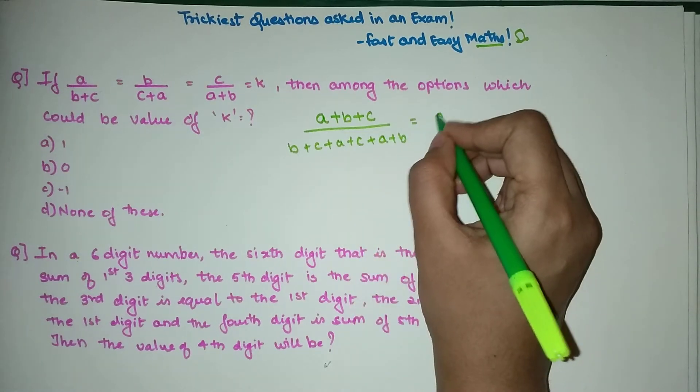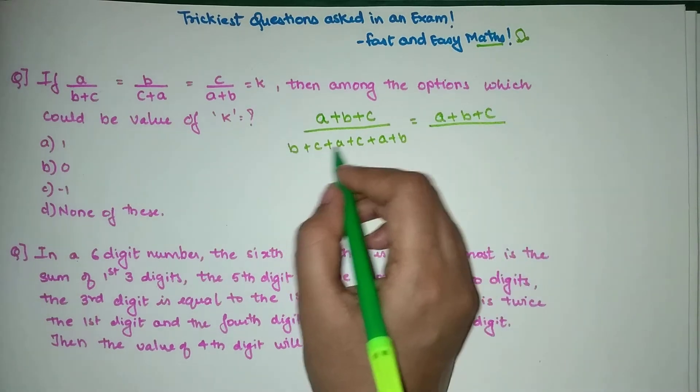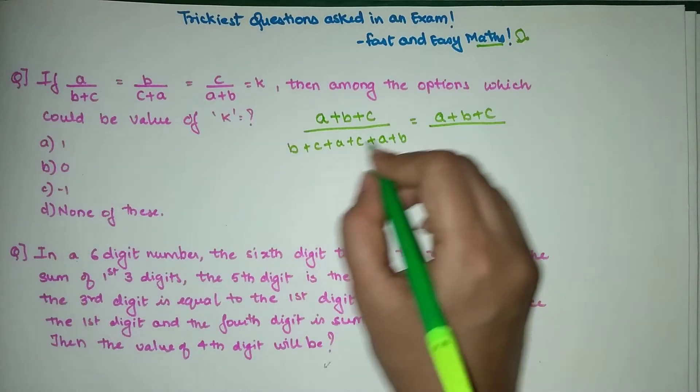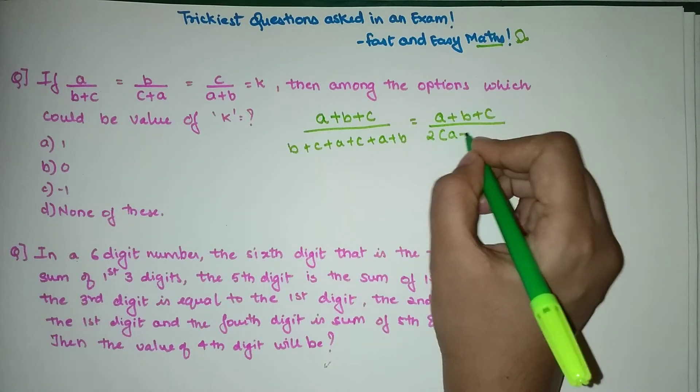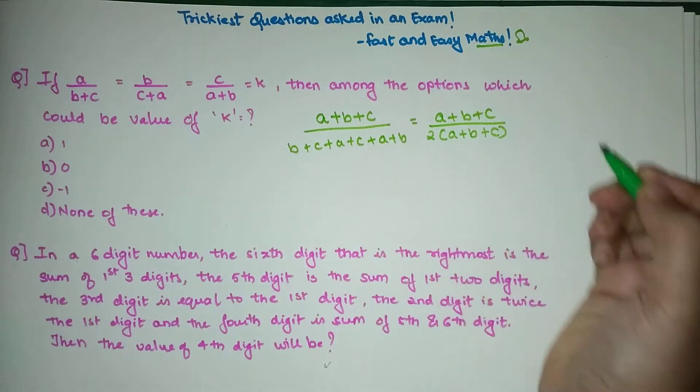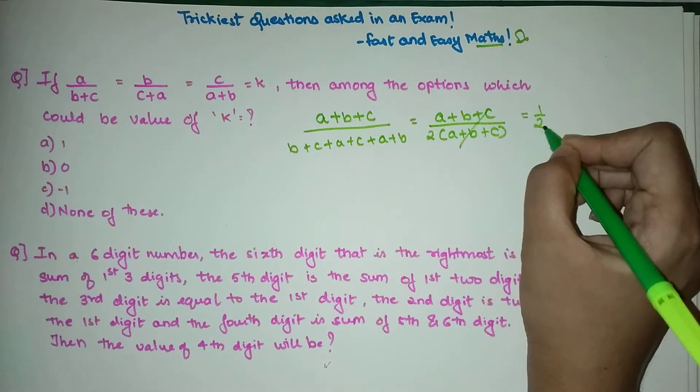We will keep A+B+C as it is. In the denominator we have two B's, two A's, and two C's. We take 2 outside and then we have A+B+C. Most of you would have cancelled this and your answer is 1/2, that is 0.5, but that is not the answer.